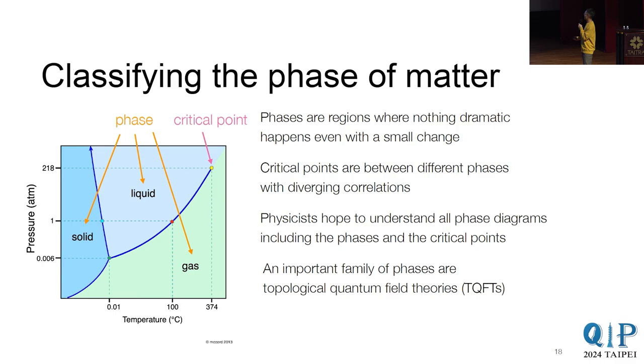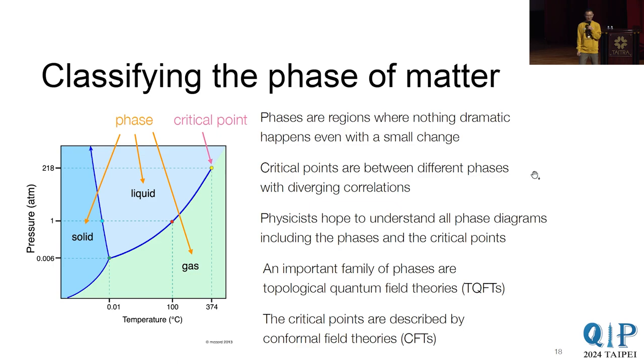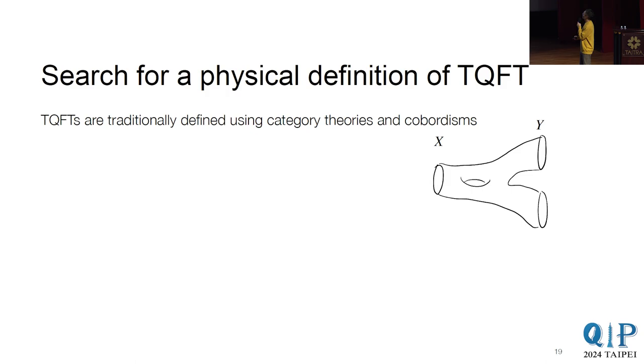An important family of these phases are called these topological quantum field theories. So for people who do error-correcting codes, toric codes is exactly one of these. And for critical points, they're described by these conformal field theories. So these quantum field theories are what we'll explore for the later slides. And we'll start with these topological quantum field theory. So how do people define these TQFTs? Well, traditionally, they're defined using category theories and cobordisms. So these are axioms written by mathematicians, and they sort of just go to us and then say that, okay, this is the right definition.